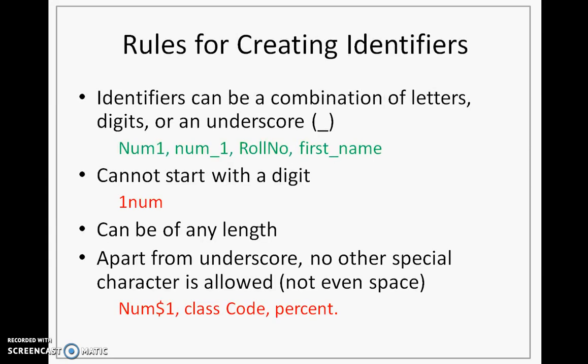Here the identifier rules are listed out. The first rule says that identifiers can be a combination of letters, digits, and one special character called an underscore. You see the examples here. The second rule says that it should not be starting with a digit. So here, though num1 is a combination of letter and digit, it is starting with a letter. That is why this is valid, whereas here, 1num is invalid because it is starting with a digit.